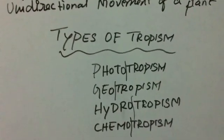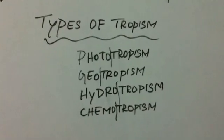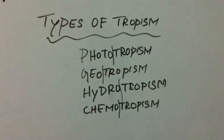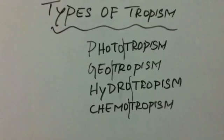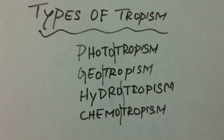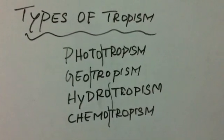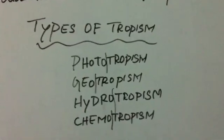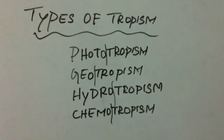An example of geotropism is the root of a plant, as roots mostly grow inside the ground. Hydrotropism is the movement of a plant part towards water. An example is the root of a plant — some plants have roots inside water as well.